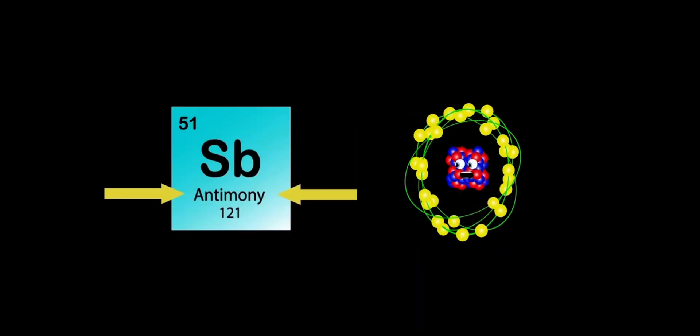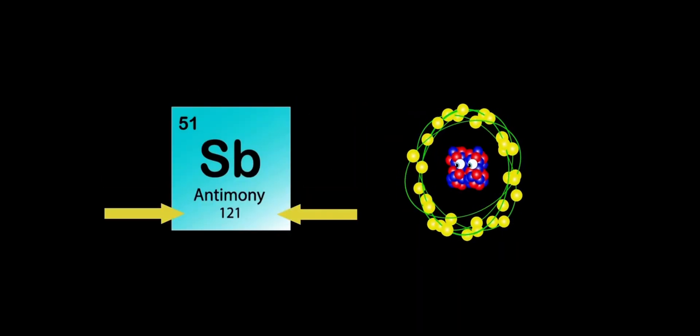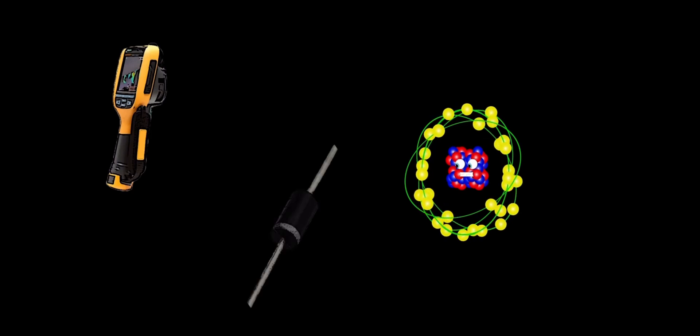I'm Antimony, my atomic number is 51, my atomic mass is 121, Sb is my symbol, I'm not done. I'm used in the electronics industry to make some semiconductor devices like infrared detectors and diodes you see.